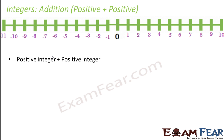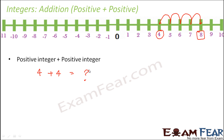Let us say one positive integer is 4 and another is also 4. What would be 4 plus 4? We locate 4 on the number line. We add positive 4, so we move towards the right — 1, 2, 3, 4 — and we have reached 8. So 4 plus 4 equals 8. Notice that whenever we add a positive number to an integer, the overall value increases: the integer was 4, and after adding positive 4 it became 8, which is bigger.